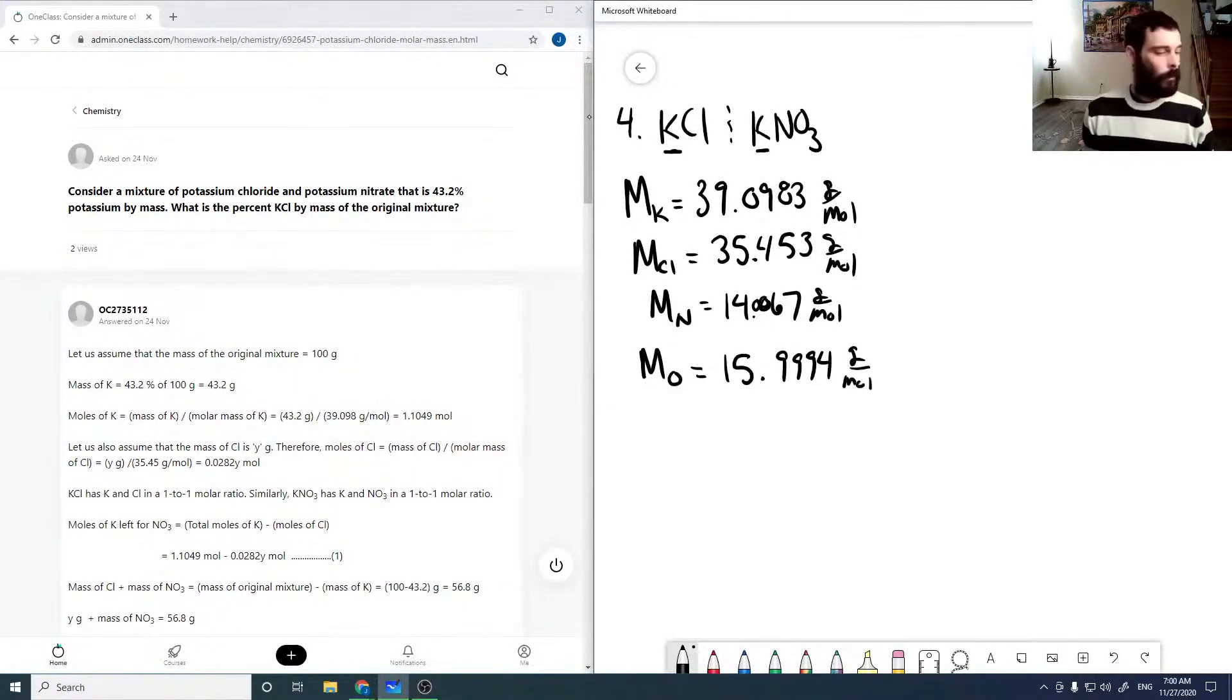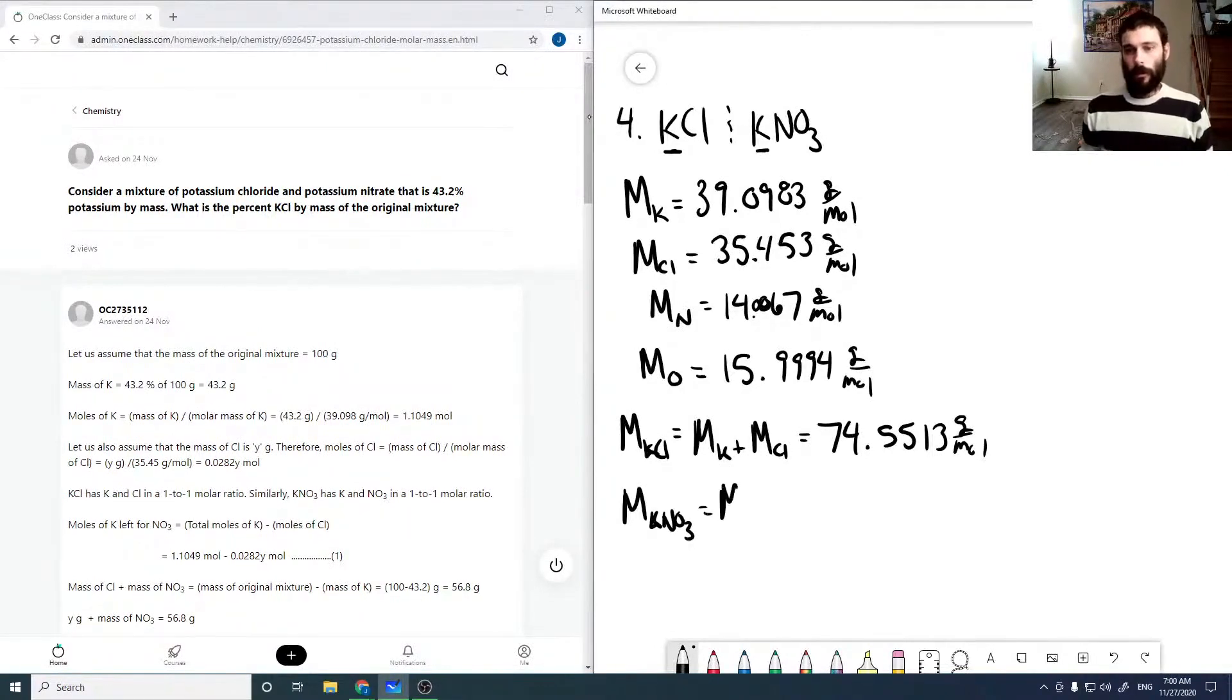All right, so the molar mass of KCl is MK plus MCl, which comes out to be 74.5513. And the molar mass for potassium nitrate is our potassium plus our nitrogen plus three times our oxygen, which comes out to be 101.1032.